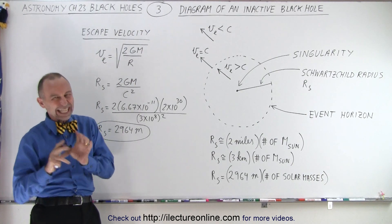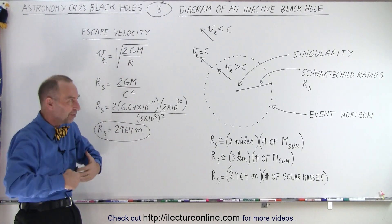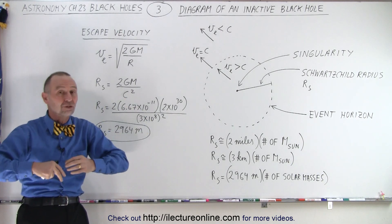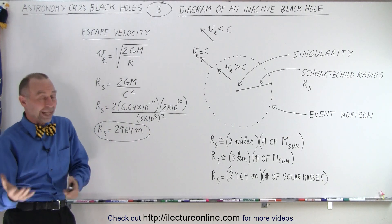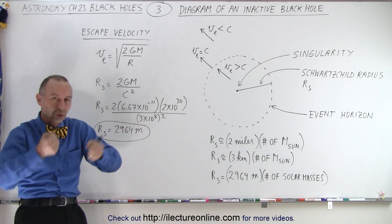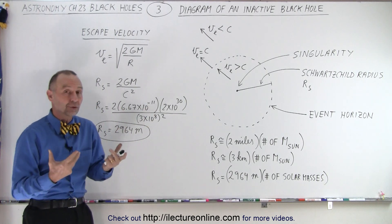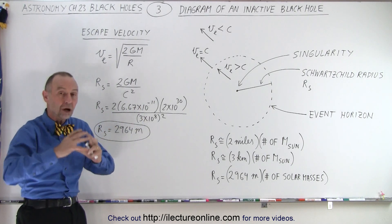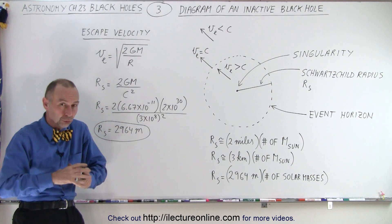It doesn't eat material — it pulls it in gravitationally. But if it's not in the act of actually pulling in material, it's called an inactive black hole, as opposed to an active black hole that is currently pulling in material. Black holes, when they have the opportunity, will pull in more material and cause the mass inside the black hole to grow.